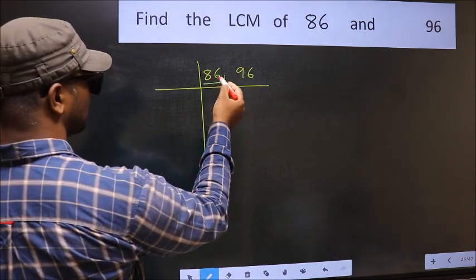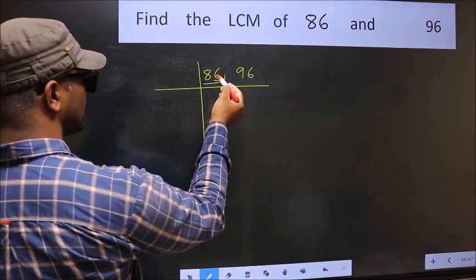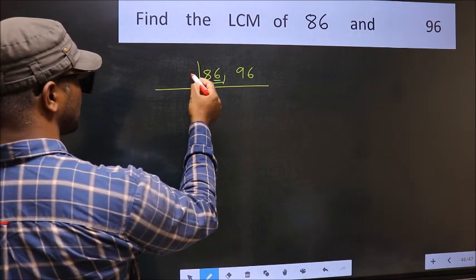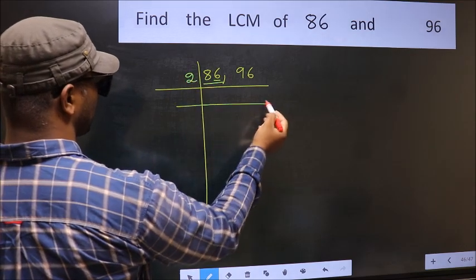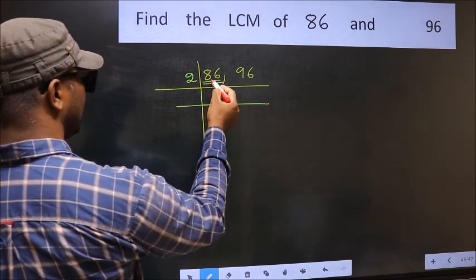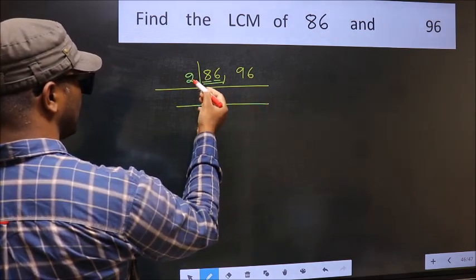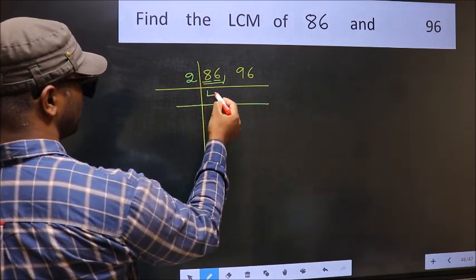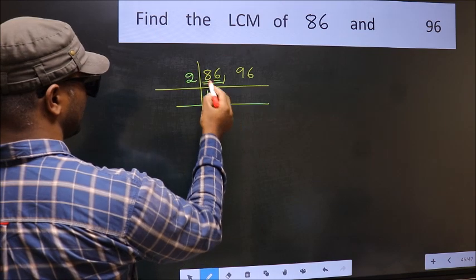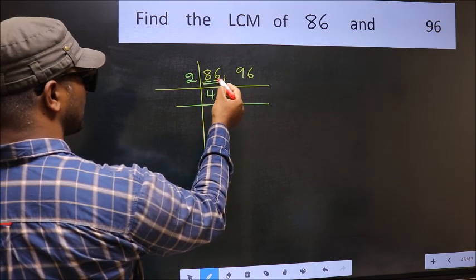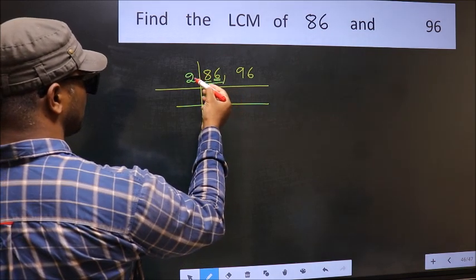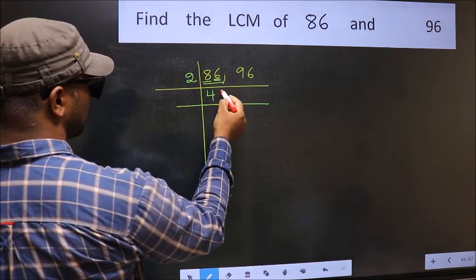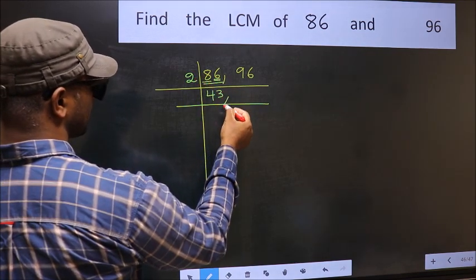The last digit of 86 is 6, so it is divisible by 2. For the first number: 8 — in the 2 times table, 2 fours are 8. For the second digit 6 — in the 2 times table, 2 threes are 6. So 86 divided by 2 gives 43.